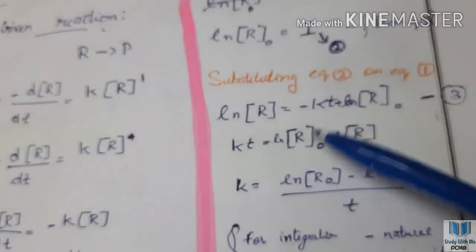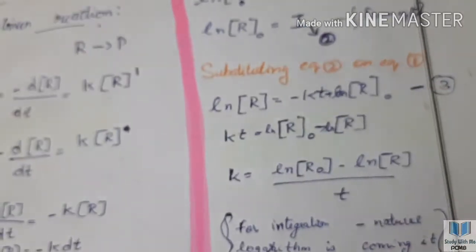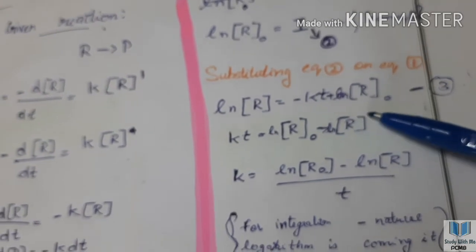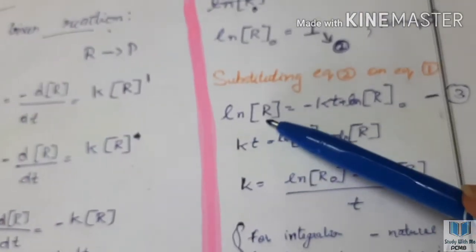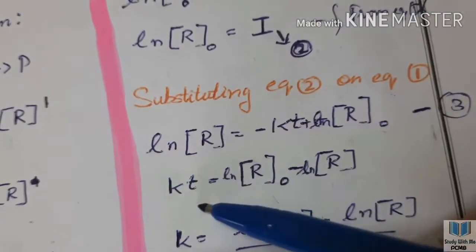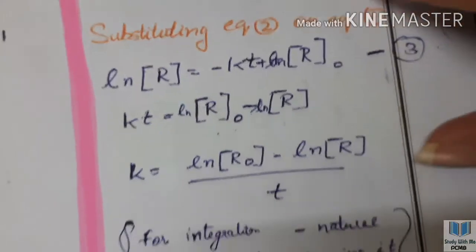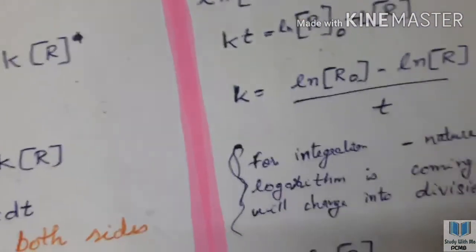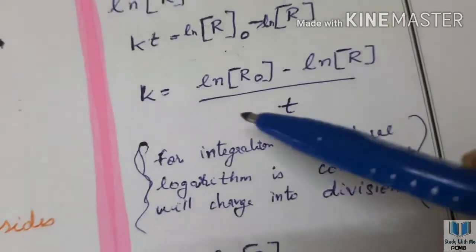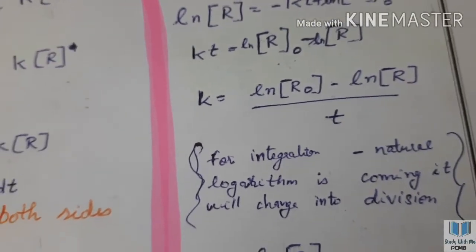Let's rearrange. Moving minus kt to the other side, the left side becomes ln[R₀]. So kt equals ln[R₀] minus ln[R]. Separating k to the other side, k equals ln([R₀]/[R]) divided by t.